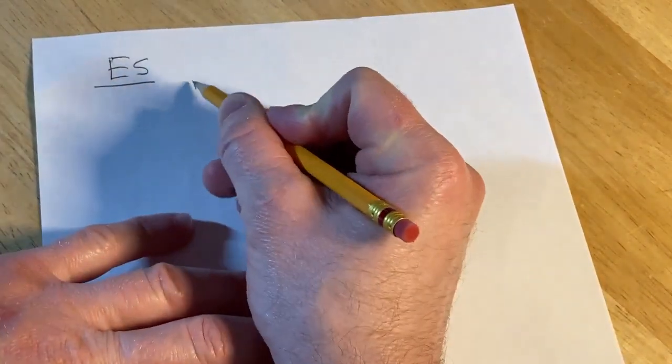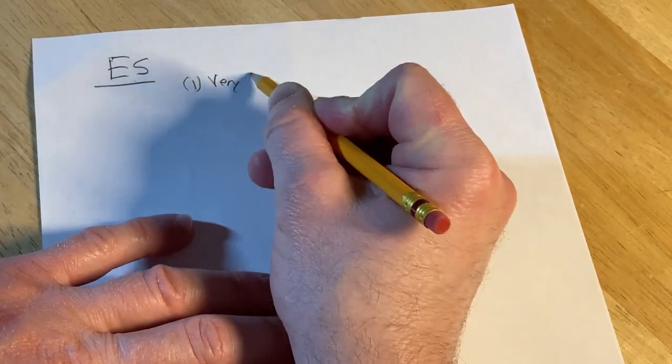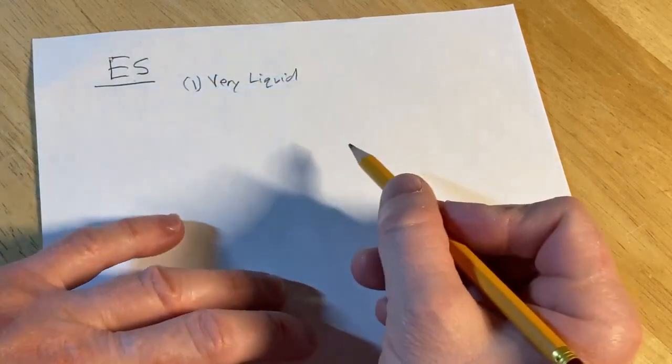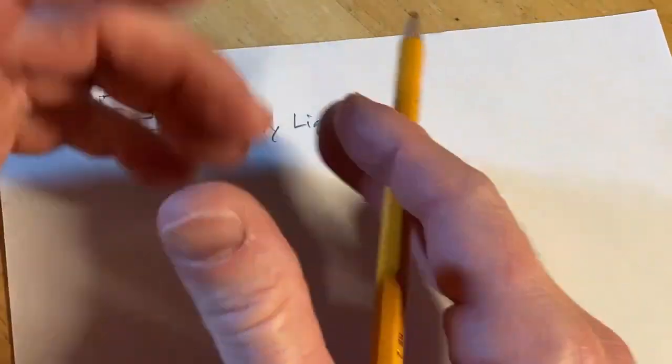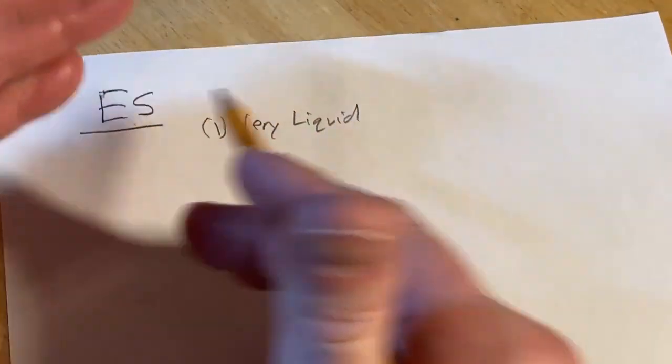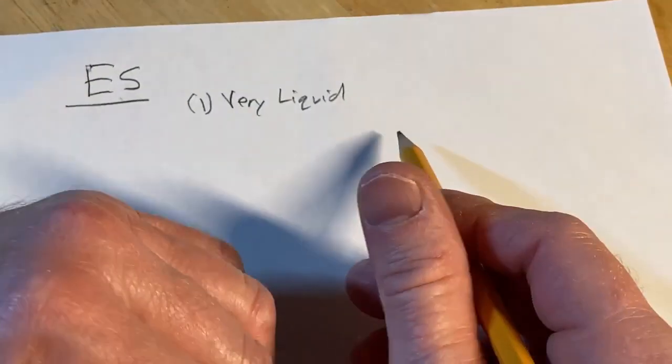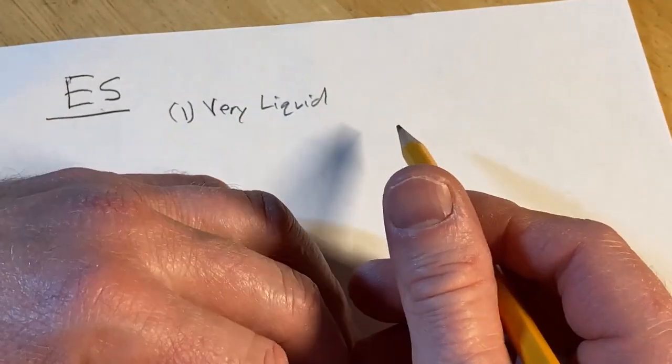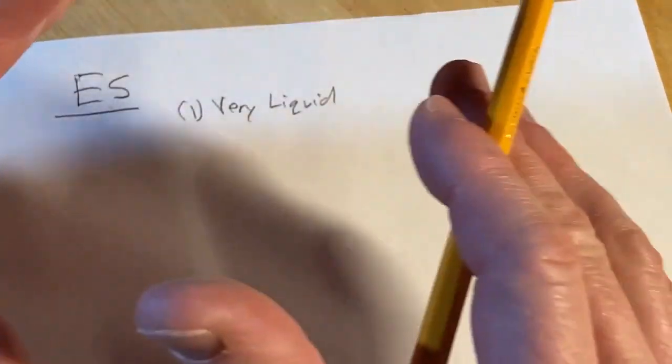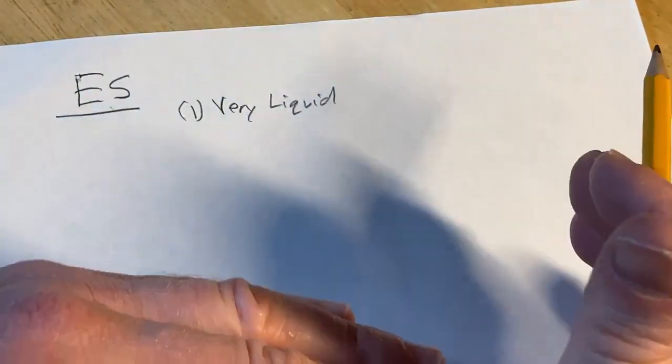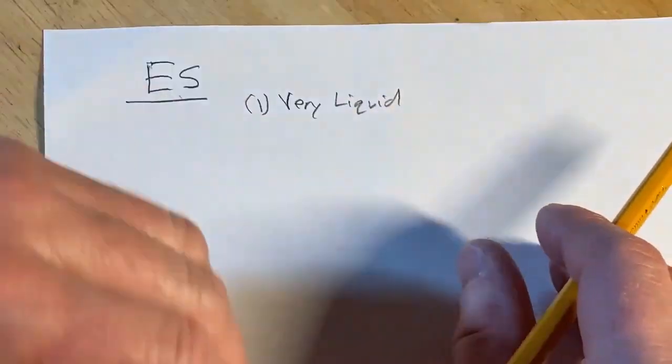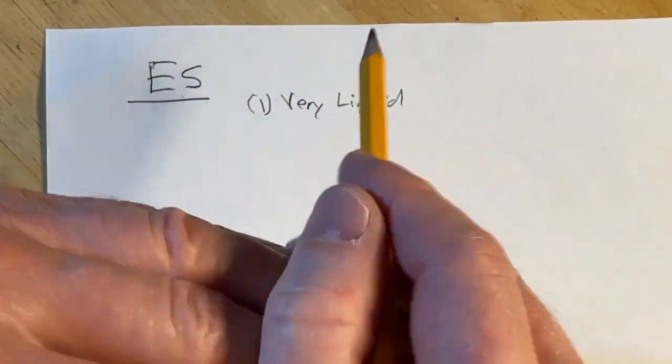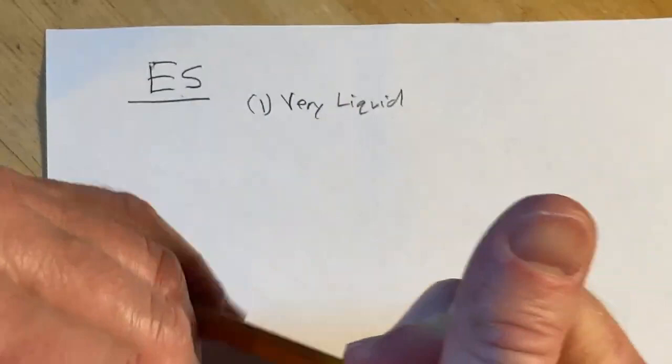So first of all, this is very liquid. What that means is that it is very easy to buy and sell this. If you're trying to get into the investment, as long as you have enough money to purchase one contract, you can buy one contract. Likewise, you can get out very easily. Not all investments are that way. For example, if you were to buy a home, then you would want to sell your home. Maybe that takes some effort. You can't just press a button. So very liquid, very easy to get in, very easy to get out.